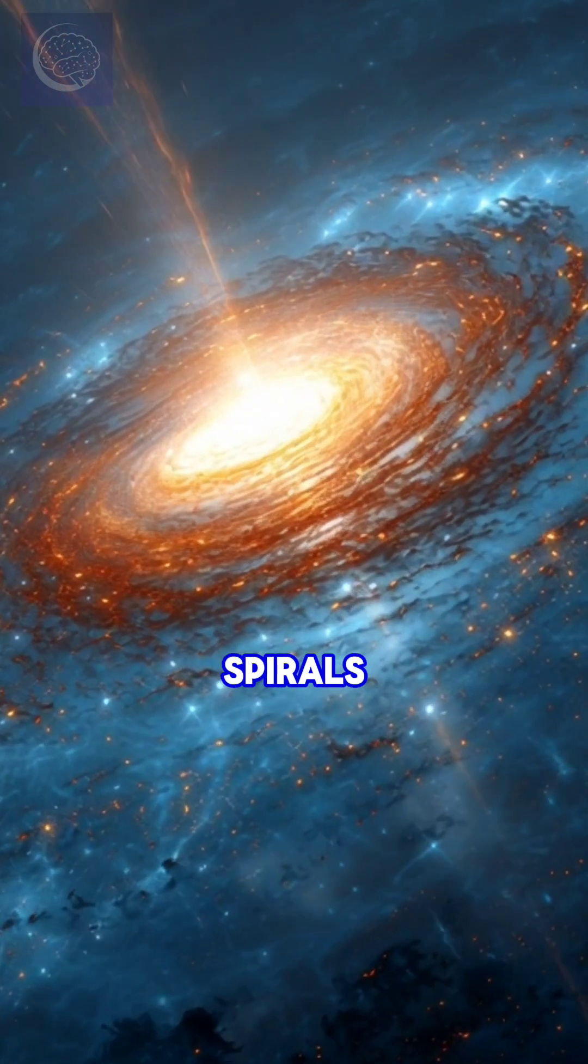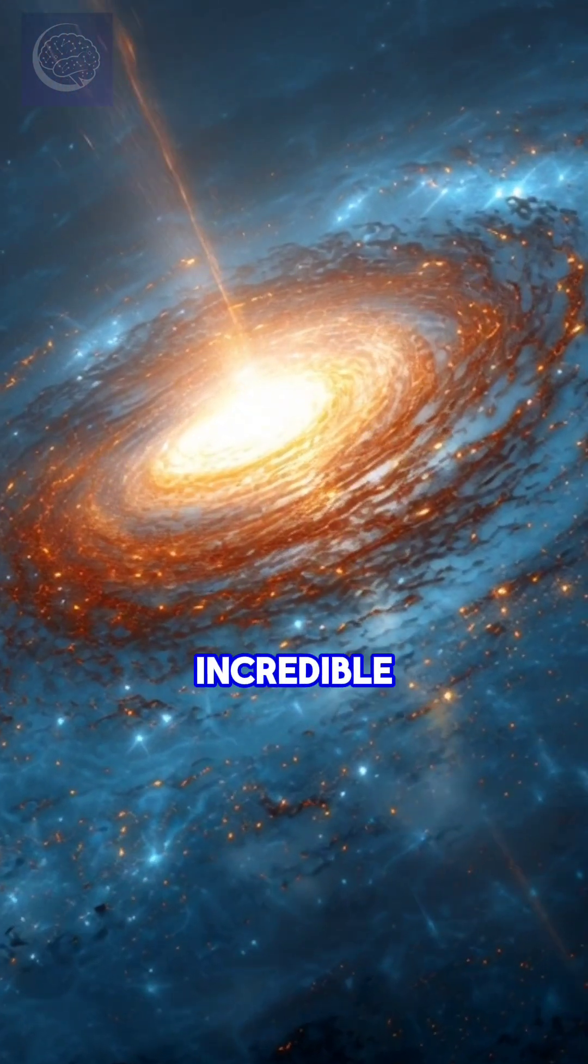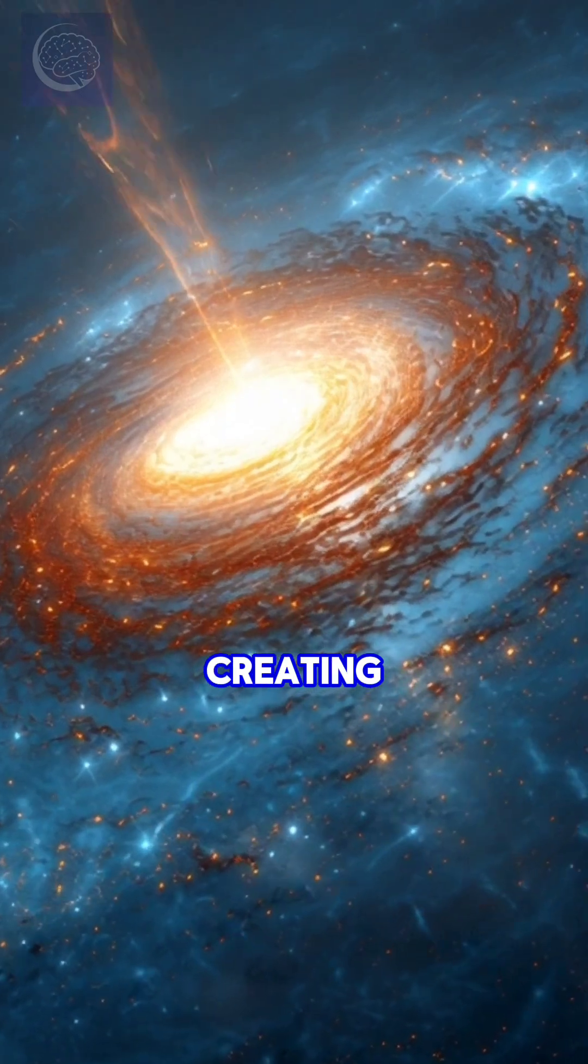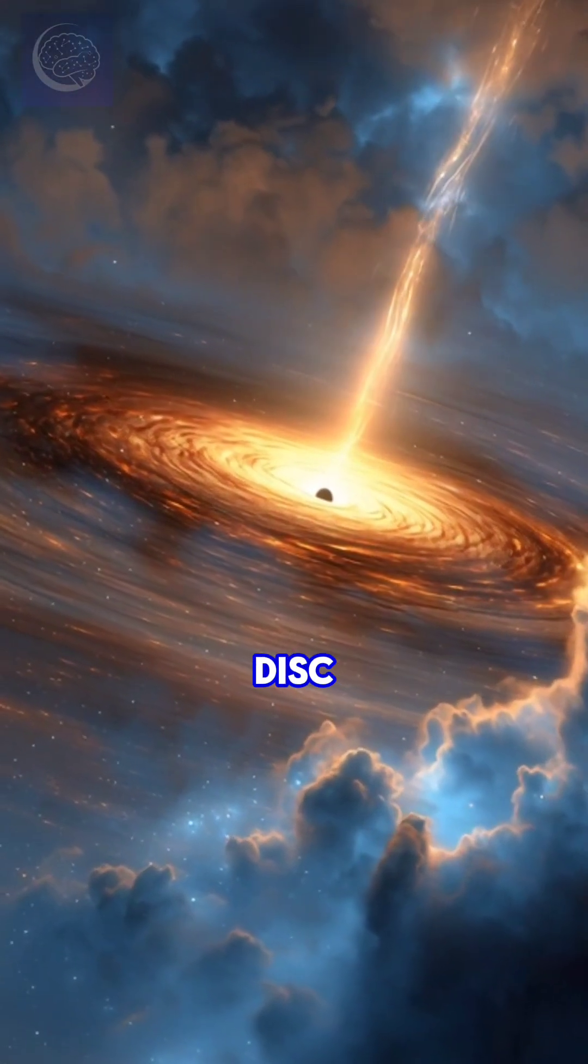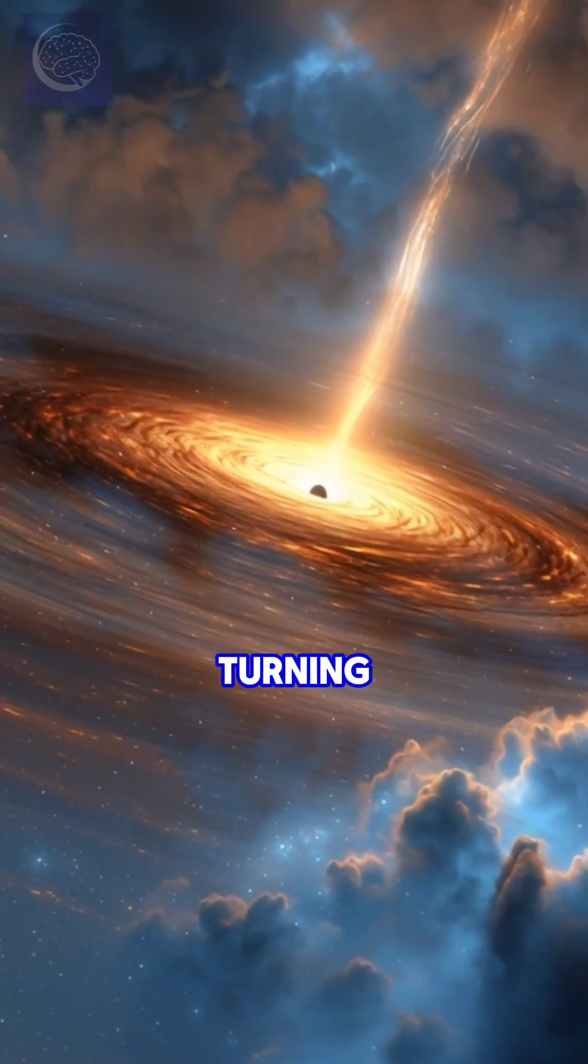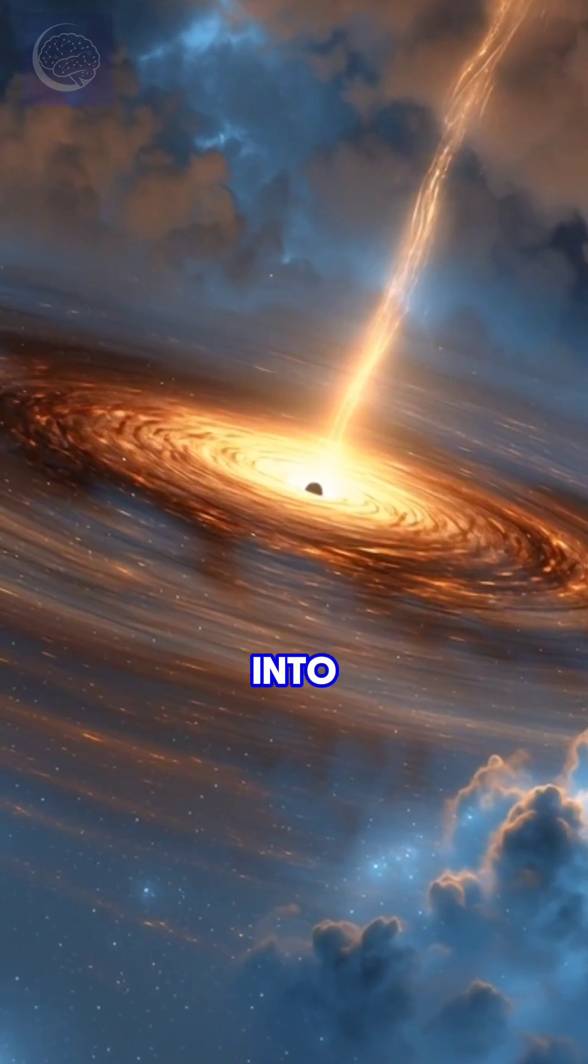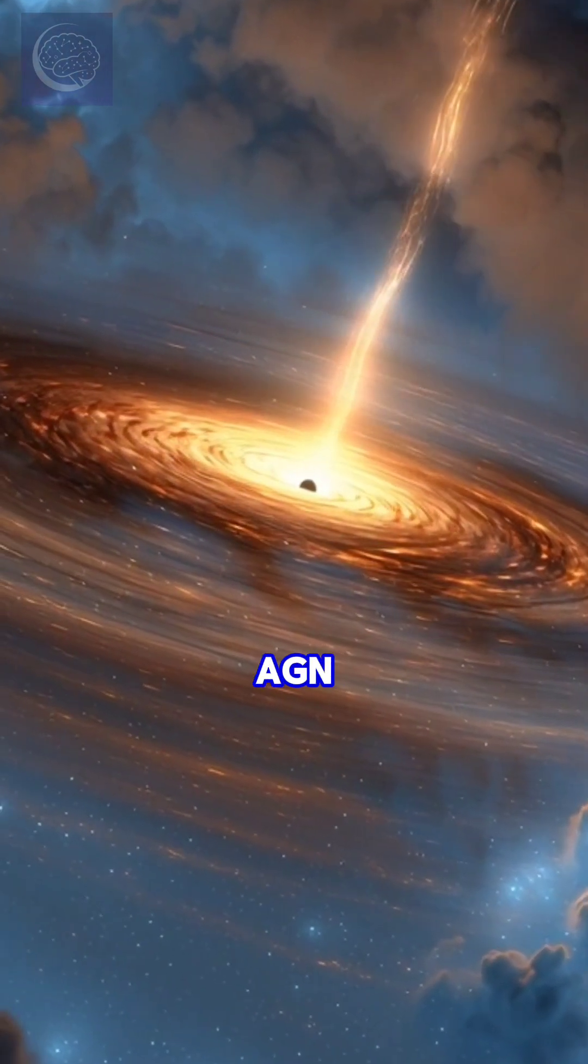As this material spirals in, it heats up to incredible temperatures, creating a blazing hot accretion disk. This cosmic meal is turning the quiet galaxy into an active galactic nucleus, or AGN.